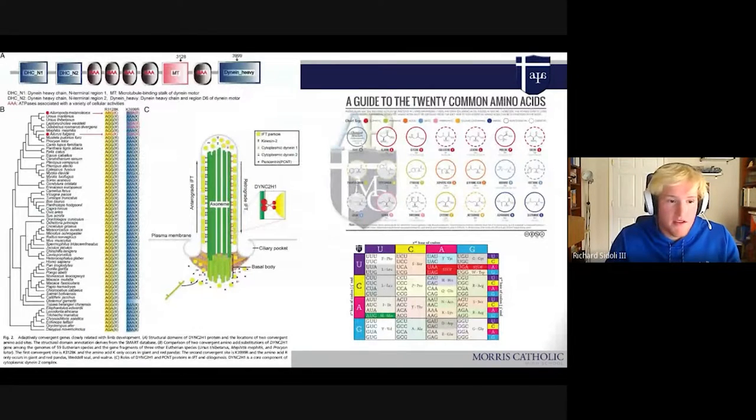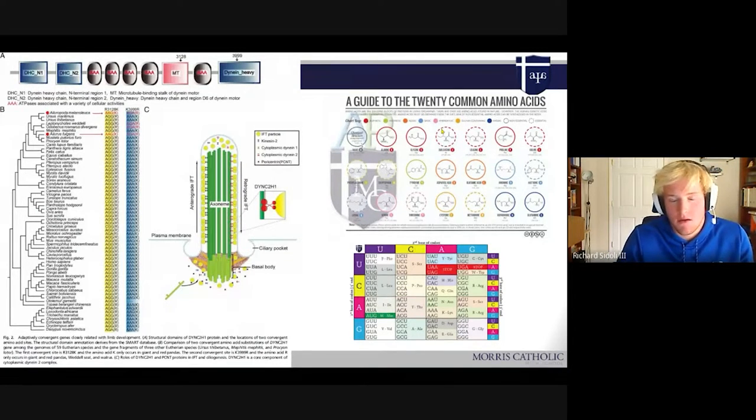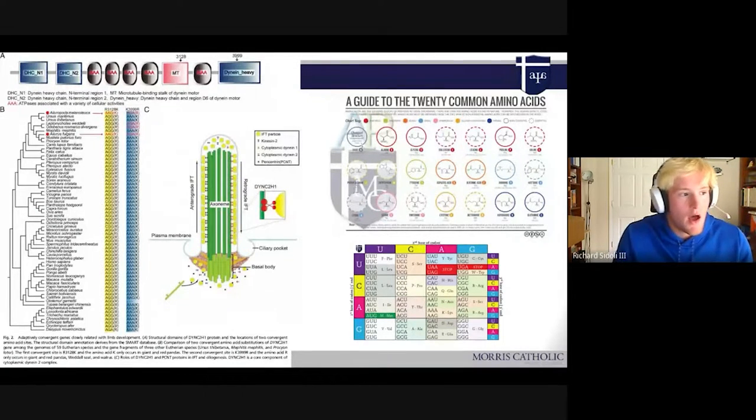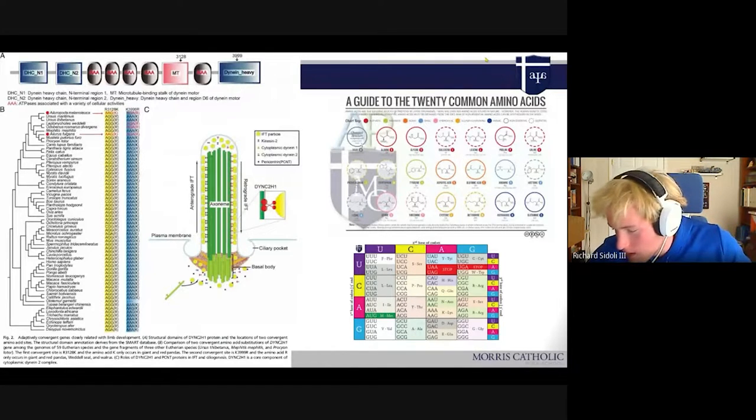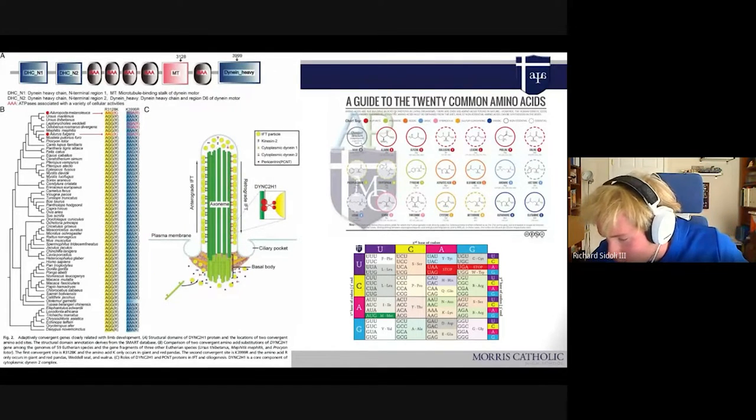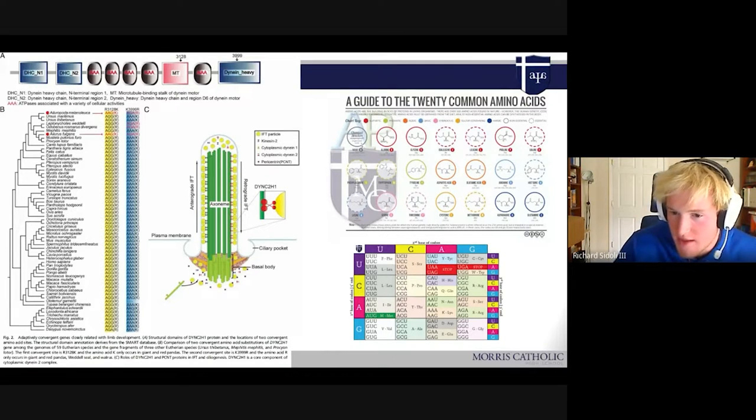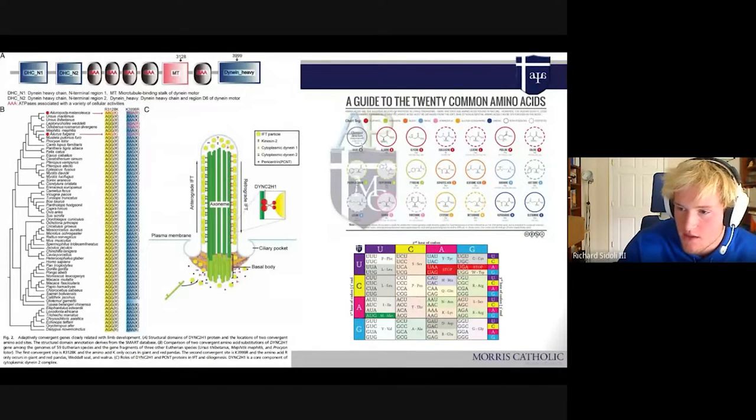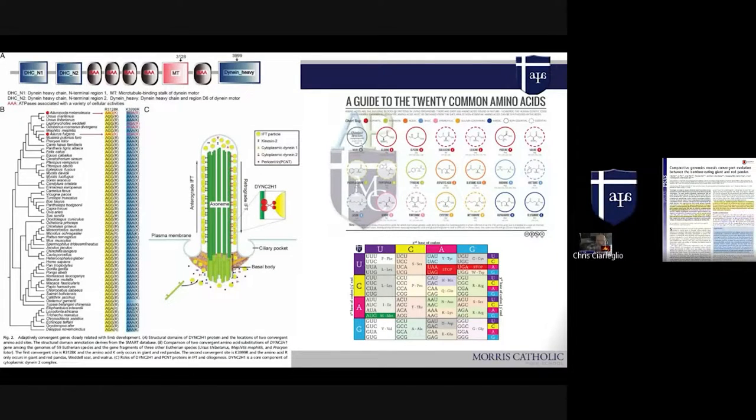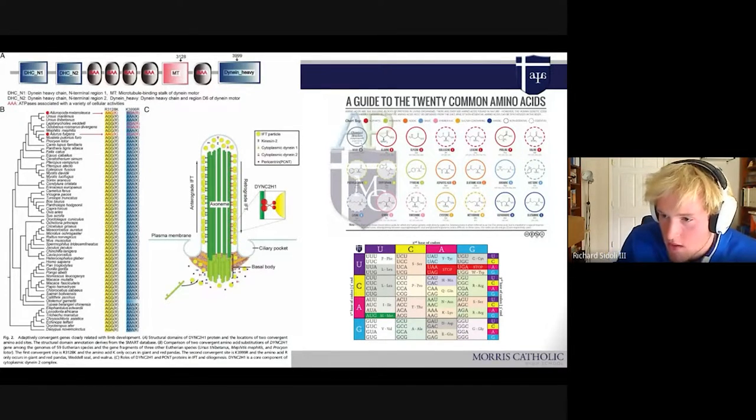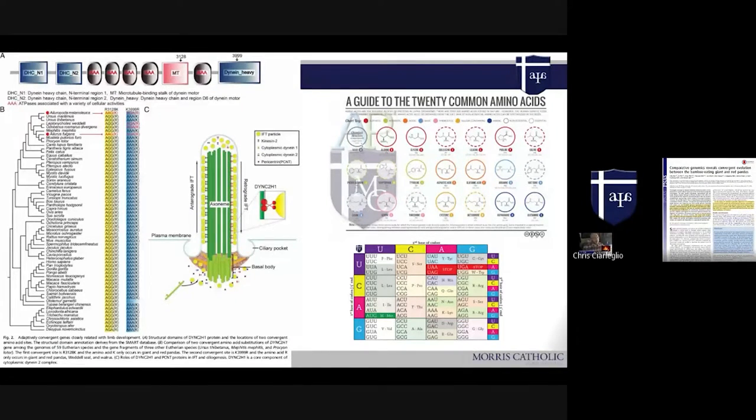So the rest of the paper then gets into what they think is probably the genetic cause for a lot of the similarities you see. It deals with a protein called DYNC2H1. It's the dynein protein. It's the motor for the cilia.